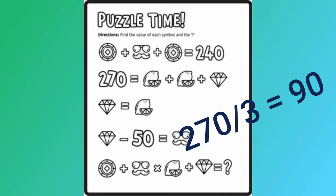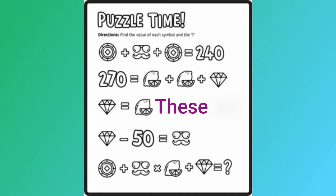So 270 divided by 3 equals 90. So I know that the diamond is 90. I know that the citrus fruit is 90.